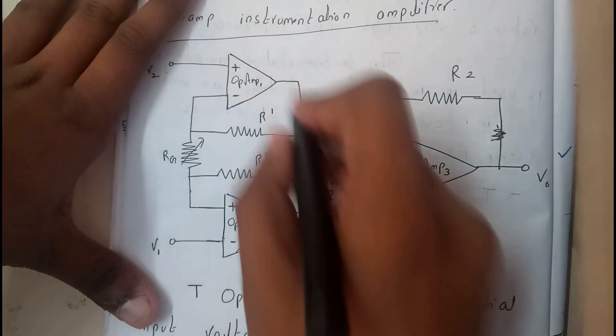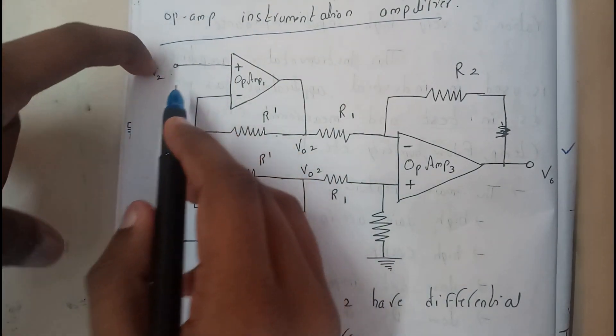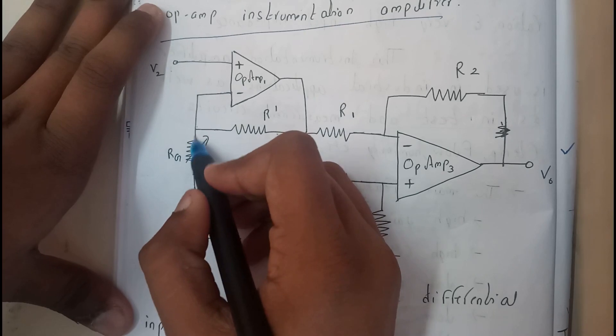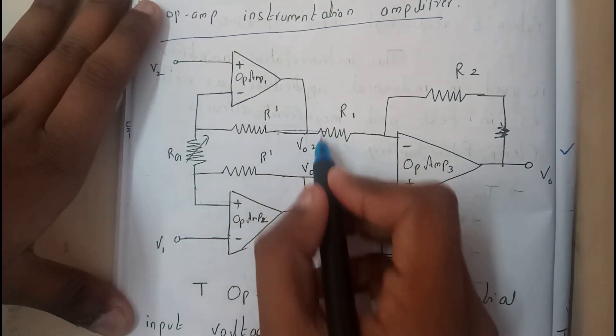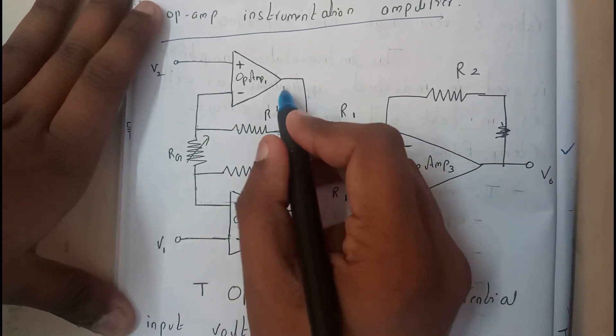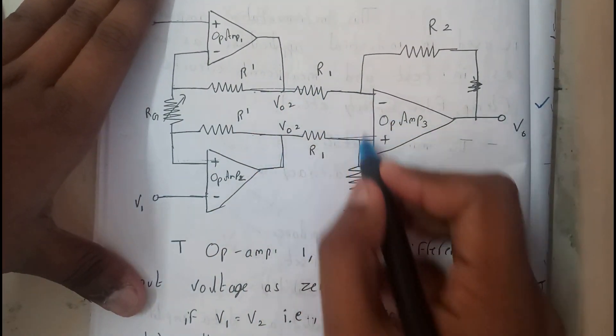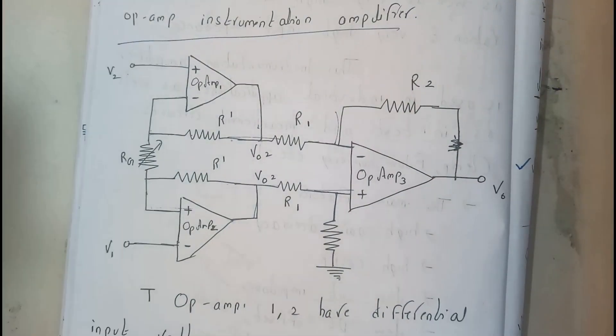This input will be the inverting, this will be the non-inverting. This part is given to a resistor, from here a resistor. Continue it, take the output, connect to the middle, draw a resistor, apply to the third op-amp. Here we'll be having a grounded one and here the feedback.